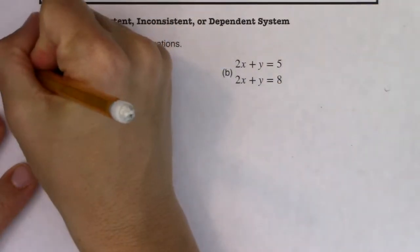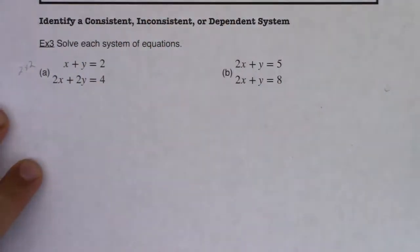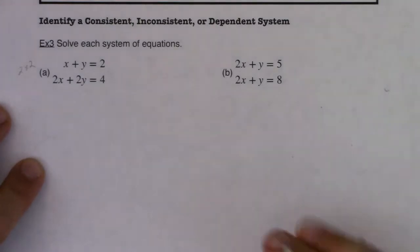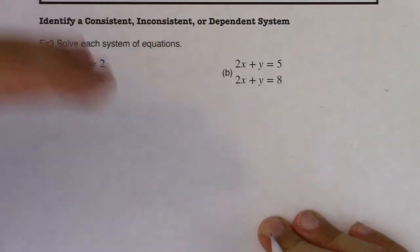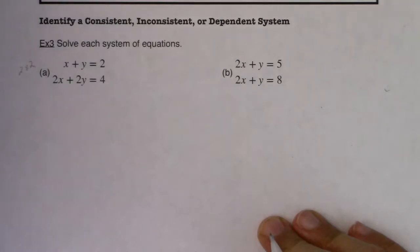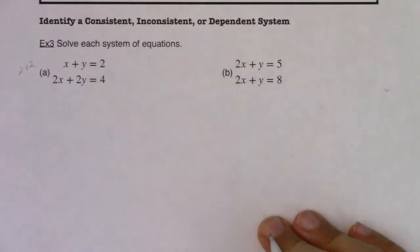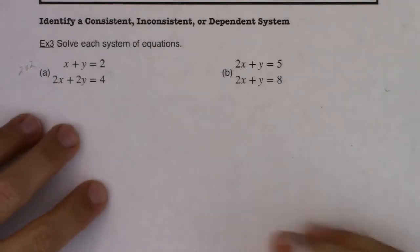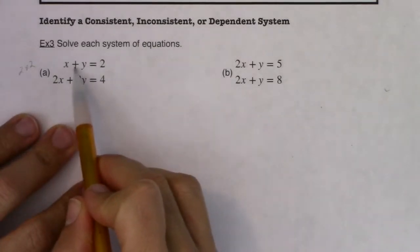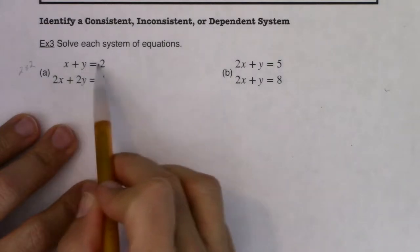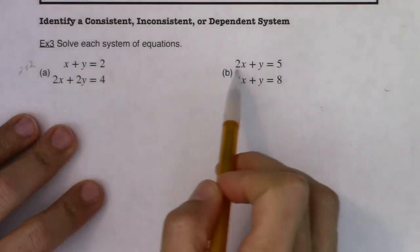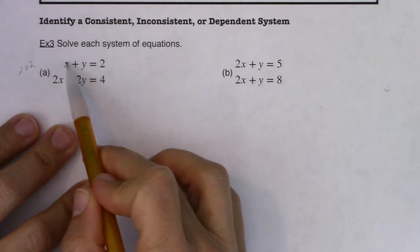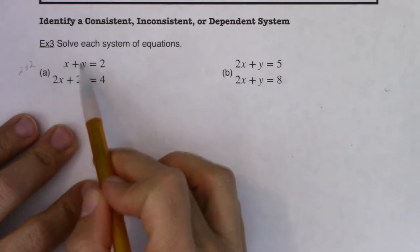We'll solve these — these are two by twos, so anything's on the table. If you want to try substitution, great. I'm going to go with elimination. Both substitution and elimination are equally simple for these systems. Elimination won't be too bad because all I'll have to do is multiply one equation by negative 2 and the other by negative 1.